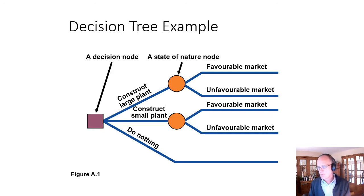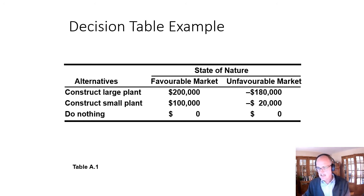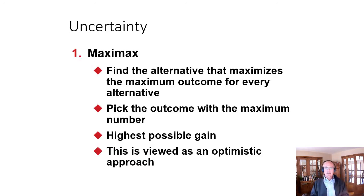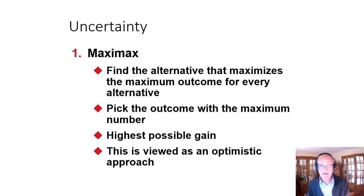Students want to choose a large plant and then choose a favorable market because it has the best return — but we can't do that. We come up with an expected value. In this case: construct a large plant return is $200,000 if the market is favorable, negative $180,000 if unfavorable; construct a small plant is $100,000 if favorable and negative $20,000 if unfavorable; doing nothing in either case results in returns of zero. We compute expected values based on probabilities and make the choice with the highest expected monetary value.